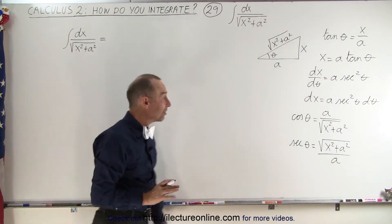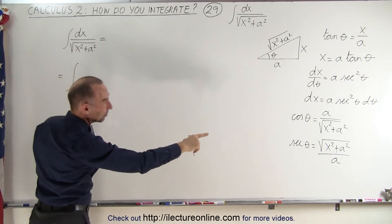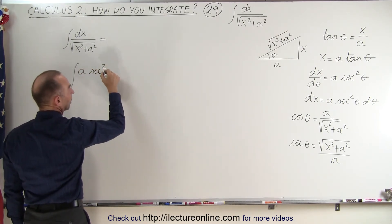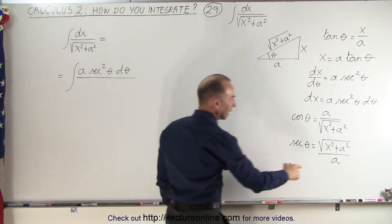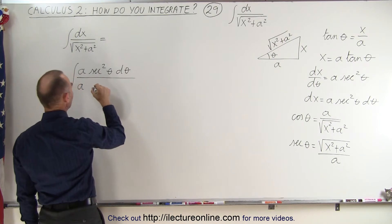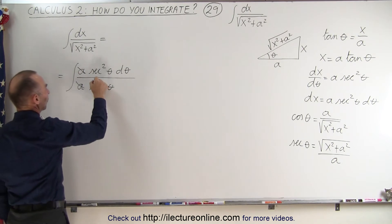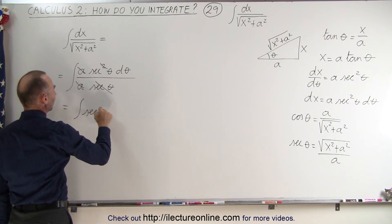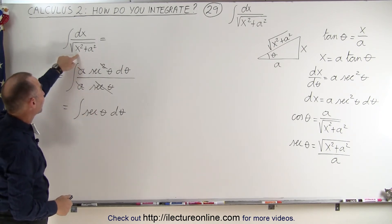I think now we have a way to get there. So I'm going to substitute for the numerator. This is equal to the integral of, instead of dx, we're going to write a times the secant squared of theta dθ divided by the denominator. The denominator can now be written as a times the secant of theta. Notice that the a's cancel out and we have one secant here, one secant there. So this becomes equal to the integral of the secant of theta times dθ.